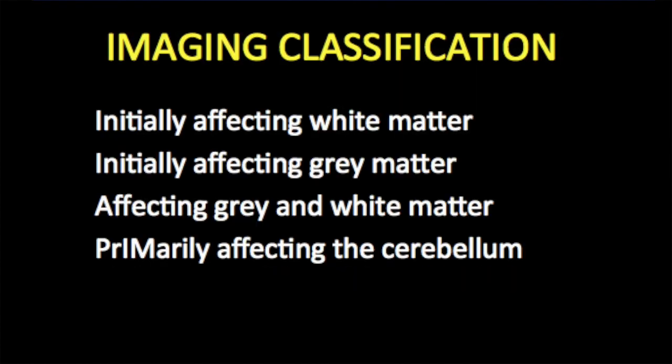The imaging classification available to us is the one put forth by Barkovich, which has been modified several times and made compact and easy to understand. We look at disorders which initially affect white matter, then disorders which initially affect gray matter, then disorders affecting gray and white matter equally, and disorders which primarily involve the cerebellum in addition to cerebral white matter.